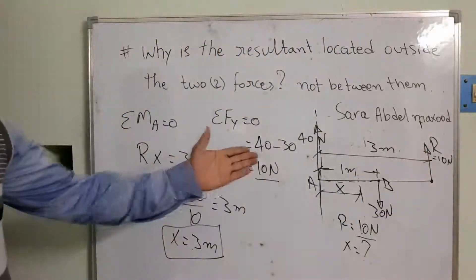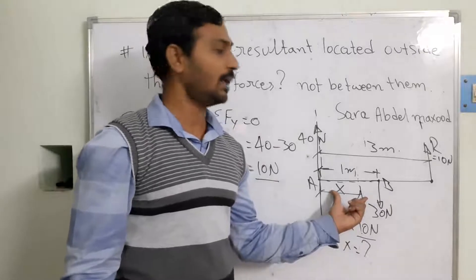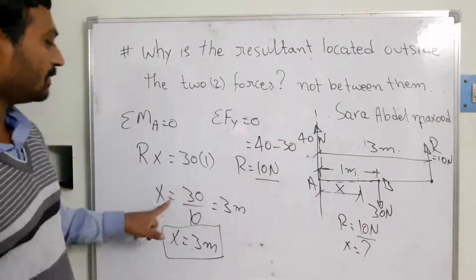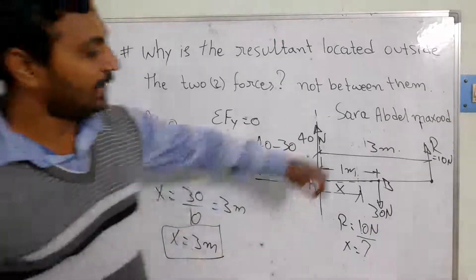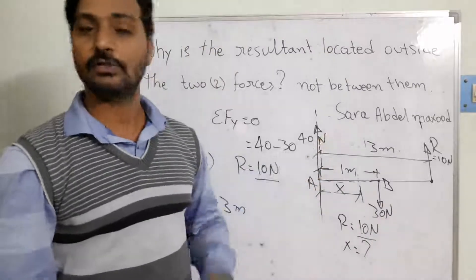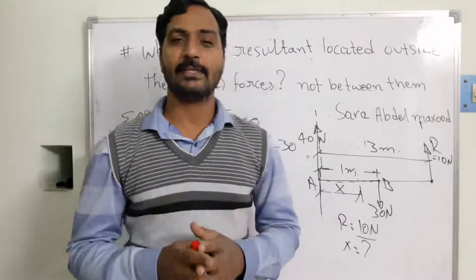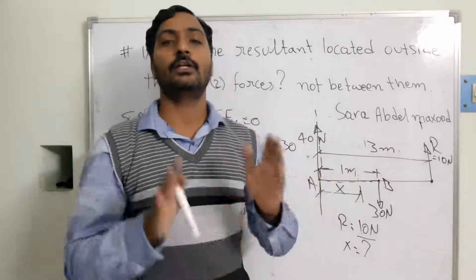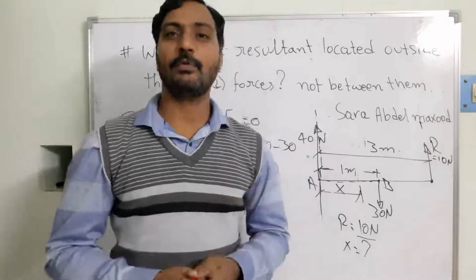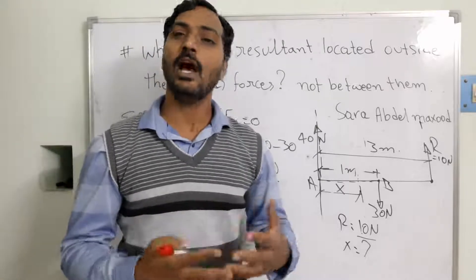The resultant component exists outside A and B — it is not between the two forces. This makes it very clear. I hope I have been able to answer your question — why the resultant component always exists outside the two unequal forces. Thank you. Please subscribe to my channel so that you can follow the sequence of lessons and be better prepared for unknown problems. Thank you.